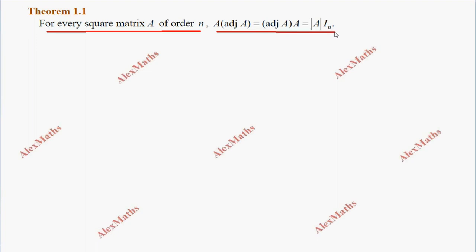We can prove this for a matrix of order n. So order n is equal to 3 rows and 3 columns.